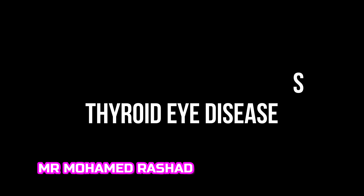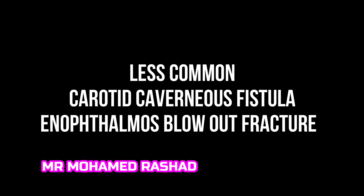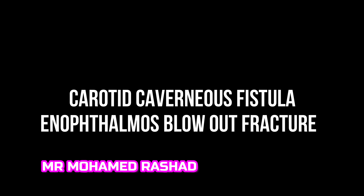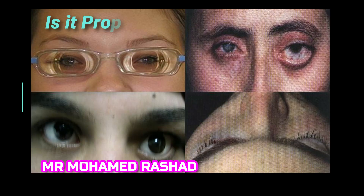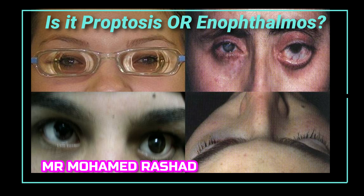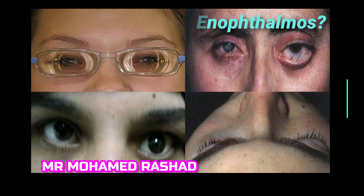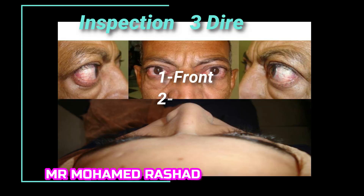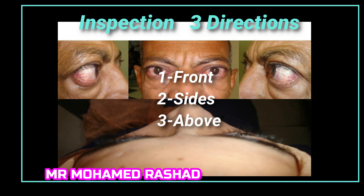The other common cases are carotid cavernous fistula, enophthalmos, and blowout fracture. You have to exclude pseudoproptosis by asking the patient about their glasses. In the upper left photo the patient is a high myope, giving pseudoproptosis. Upper right shows phthisis of the right eye and pseudoproptosis due to high myopia in the left. Lower left shows an artificial eye causing pseudoproptosis, and lower right shows a blowout fracture. You must inspect the patient from the front, sides, and above.